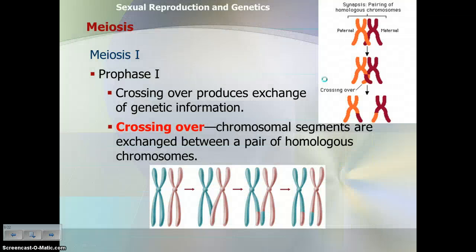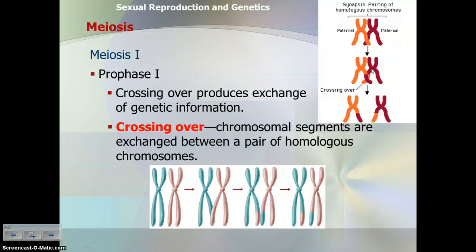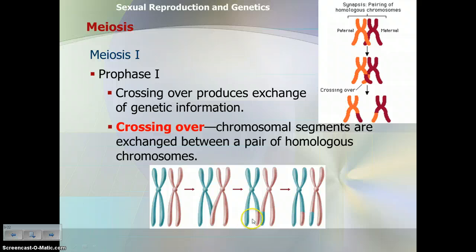Crossing over is basically an exchange of genetic information between homologous chromosomes — one given by mother, one by father. During crossing over, a piece of the maroon chromosome transfers onto the orange chromosome and vice versa. This increases genetic variety. This is why you don't look exactly the same as your sisters or brothers — crossing over creates genetic variation. You can see the chromosomes holding hands, exchanging genetic information, and that increases genetic variation.